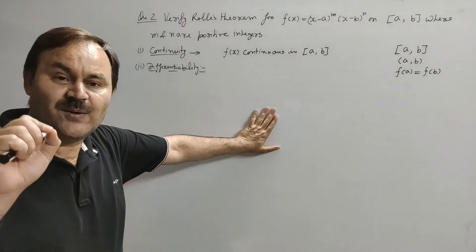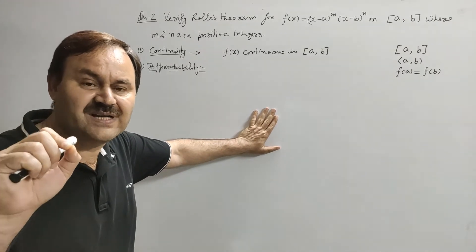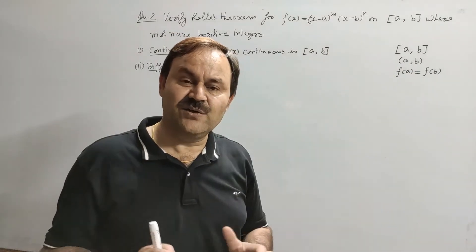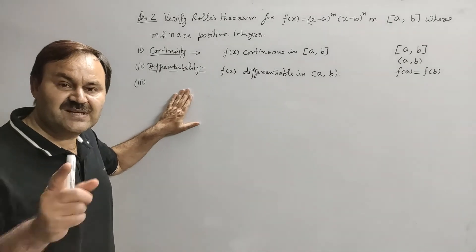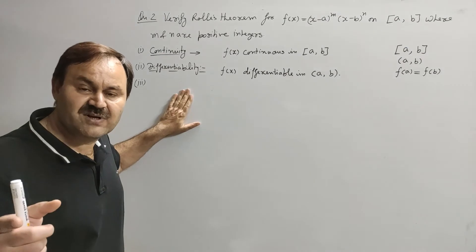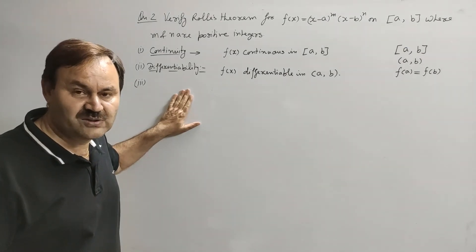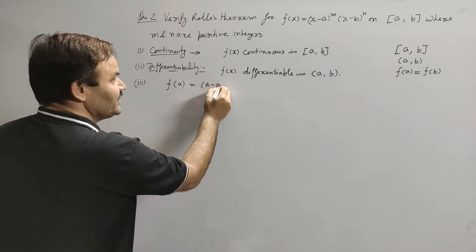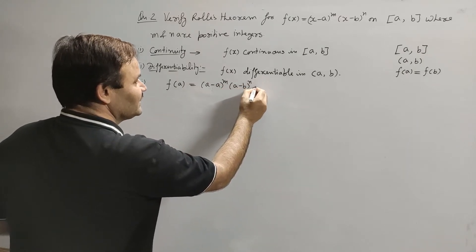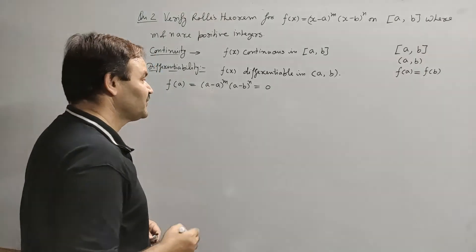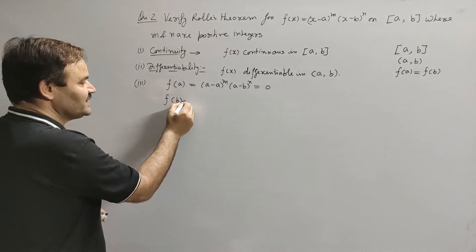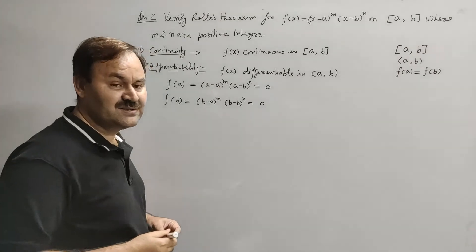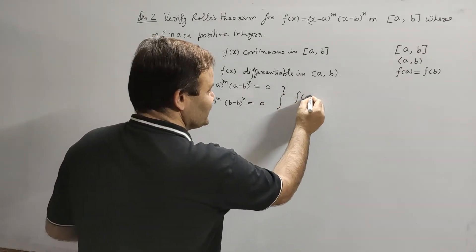A polynomial function is differentiable for all real values, so this function is also differentiable in the open interval (a, b). Now we test whether f(a) = f(b). We find f(a) = (a - a)^m · (a - b)^n = 0 · (a - b)^n = 0. Similarly, f(b) = (b - a)^m · (b - b)^n = (b - a)^m · 0 = 0. Therefore f(a) = f(b).